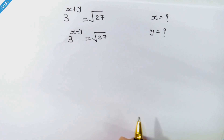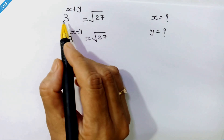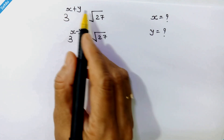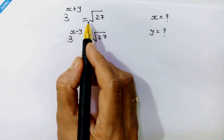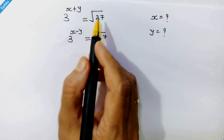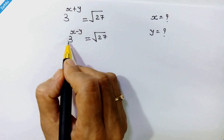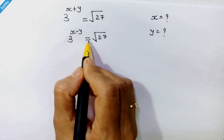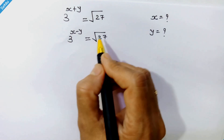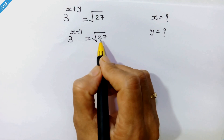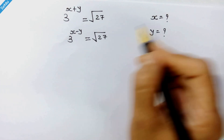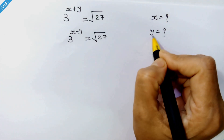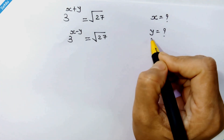Hello friends, here we have 3 raised to x plus y is equal to square root of 27, and 3 raised to x minus y is equal to square root of 27. Let's find out x and y.